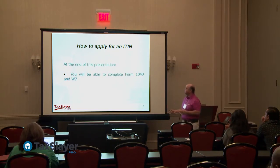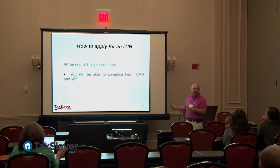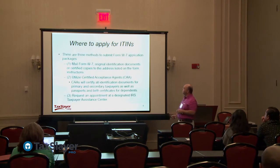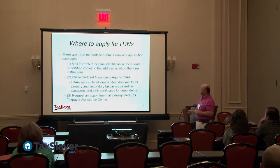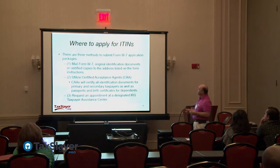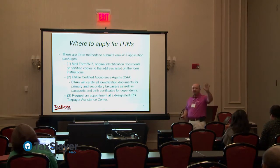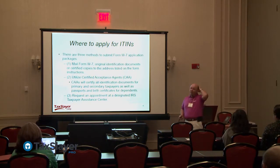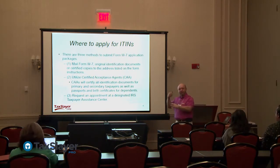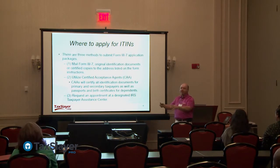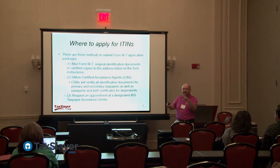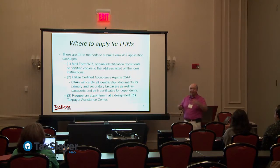At the end of the presentation we'll go through the 1040 and the W-7 in the software. For where to apply, there are three options. The first is to mail the W-7 application with original ID — essentially a leap of faith that the postal service doesn't lose it. Sending certified or registered mail only registers the package, not the contents, so once they open it, whatever happens happens.